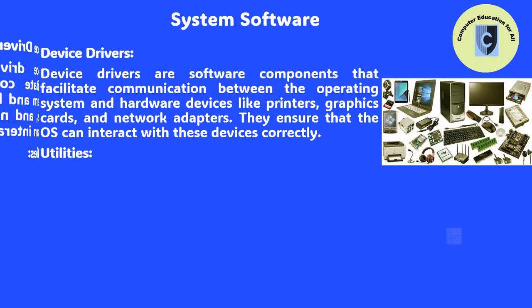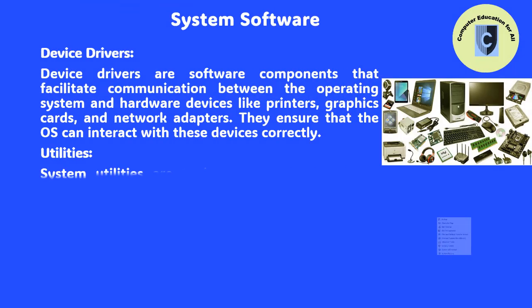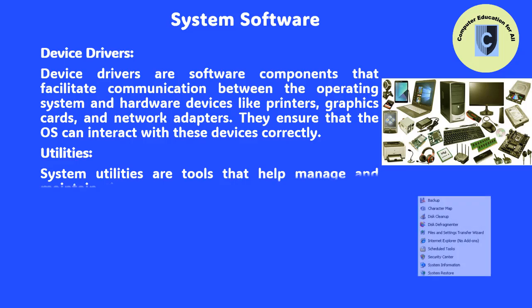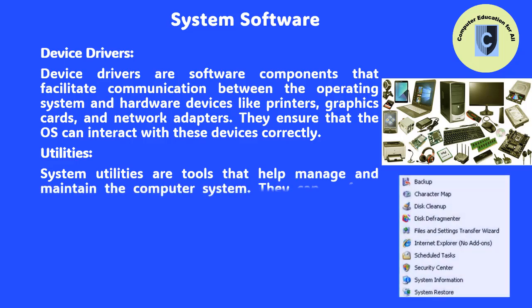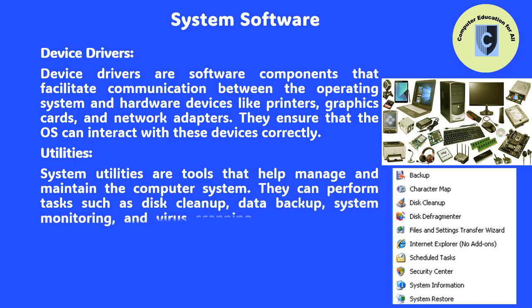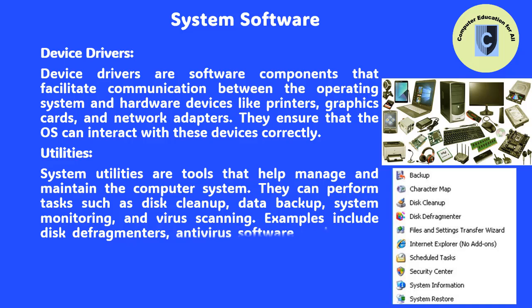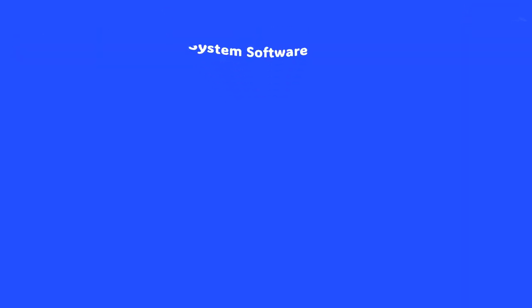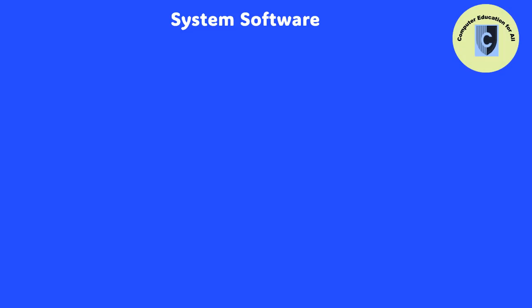Utilities: System utilities are tools that help manage and maintain the computer system. They can perform tasks such as disk cleanup, data backup, system monitoring, and virus scanning. Examples include disk defragmenters, antivirus software, and system diagnostic tools.